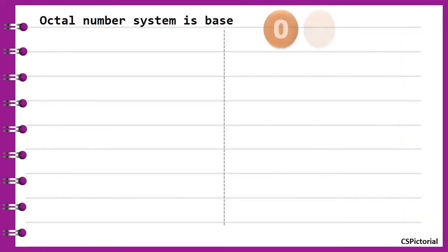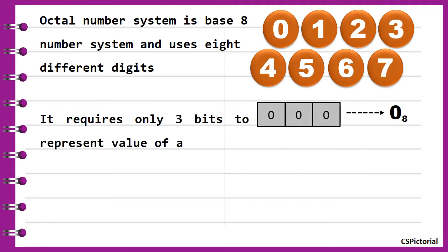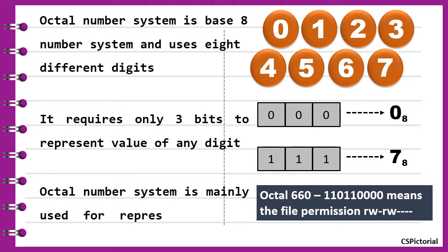Octal number system is a base 8 number system as it uses 8 digits from 0 to 7. An octal number can be represented with just 3 bits in binary. It is used for representing UNIX file permissions. The octal to decimal conversion is explained in our previous video. Kindly check the link given in the description.